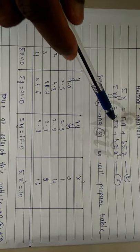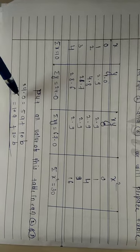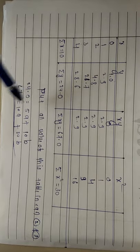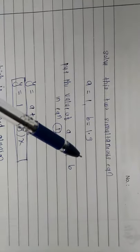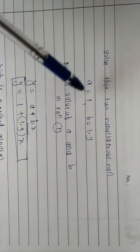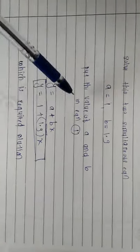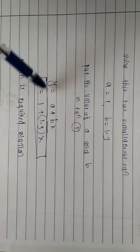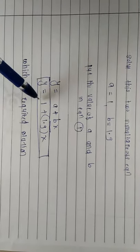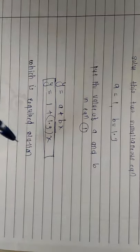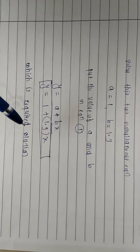After preparing this table, put the values of summation of x, summation of y, summation of xy, and summation of x squared into equation number 2 and equation number 3. You will get two equations. Solve these two equations by simplification. After solving, you will get the value of a is 1 and the value of b is 1.9. Put the value of a and b in the given equation y equals a plus bx. Then y is equal to 1 plus 1.9x, which is the required solution. This is the equation of the straight line.